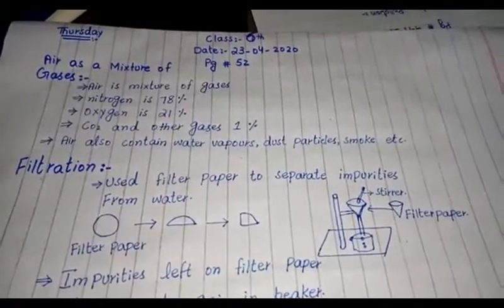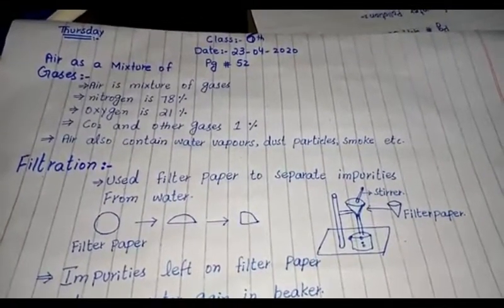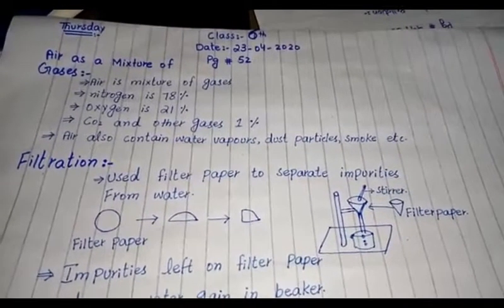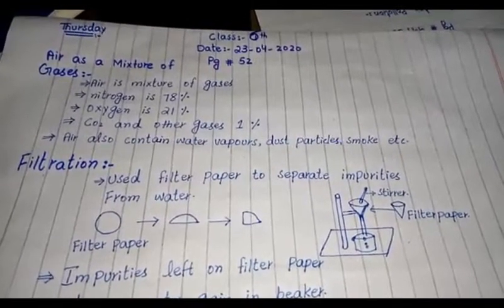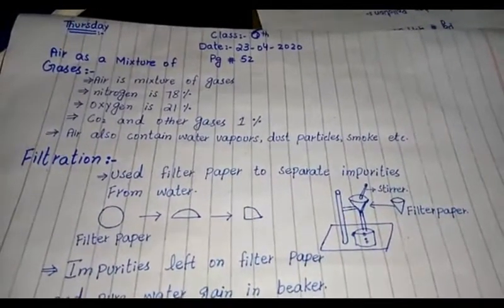We know that air contains many gases like nitrogen, hydrogen, oxygen, carbon dioxide, helium, and other gases.